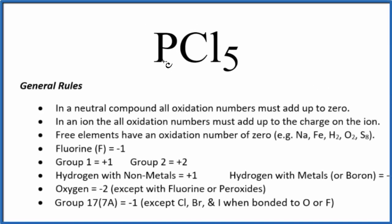To find the oxidation numbers for each element here in PCl5, this is phosphorus pentachloride, we use these rules here. We should first note that there's not a negative or positive after the PCl5. That means this is a neutral compound. All the oxidation numbers will add up to zero.